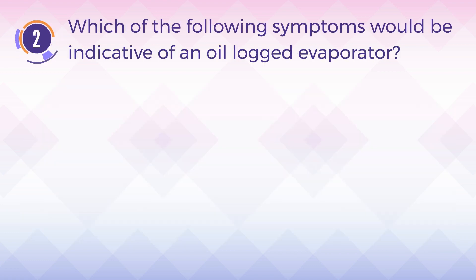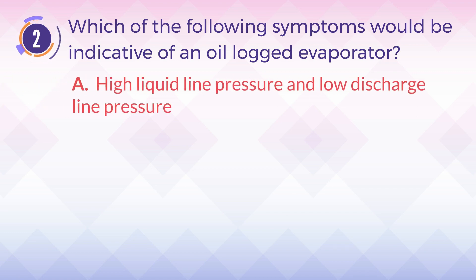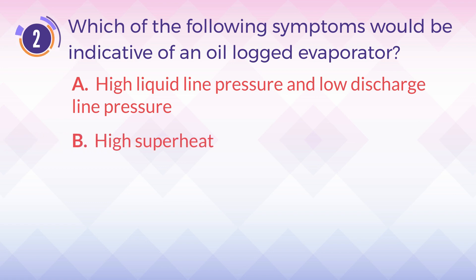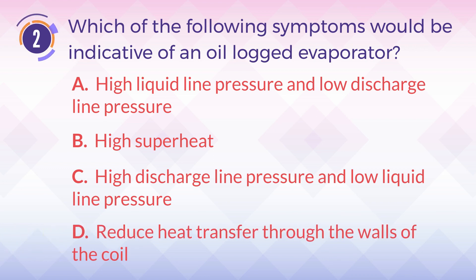Number 2. Which of the following symptoms would be indicative of an oil-logged evaporator? A. High liquid line pressure and low discharge line pressure. B. High superheat. C. High discharge line pressure and low liquid line pressure. D. Reduced heat transfer through the walls of the coil.